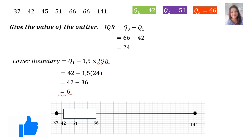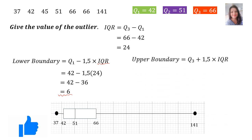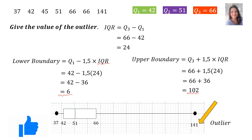So the lower boundary is 6. If your lowest value is smaller than 6, it would be classified as an outlier. For the upper boundary, the formula is: Q3 + 1.5 × IQR = 66 + 1.5 × 24 = 66 + 36 = 102. Any value greater than 102 is an outlier. Our highest value is 141, which is bigger than 102, so 141 is indeed an outlier.